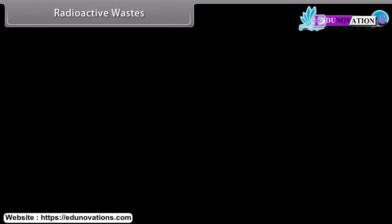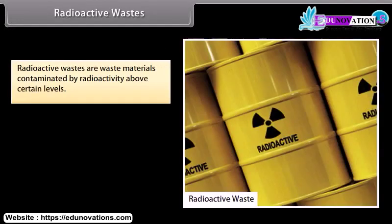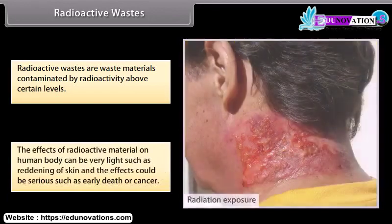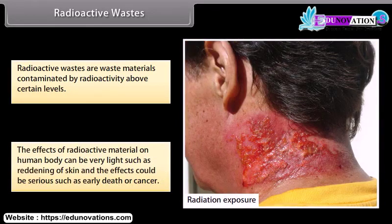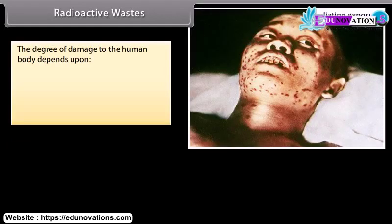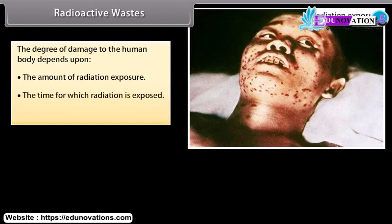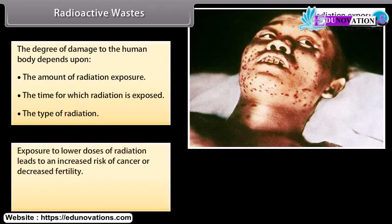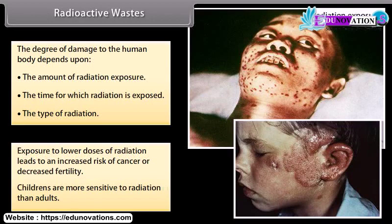Radioactive wastes are waste materials contaminated by radioactivity above certain levels. The effects of radioactive material on the human body can range from very light, such as reddening of skin, to serious, such as early death or cancer. The degree of damage depends upon the amount of radiation exposure, the time for which radiation is exposed, and the type of radiation. Exposure to lower doses leads to increased risk of cancer or decreased fertility. Children are more sensitive to radiation than adults.